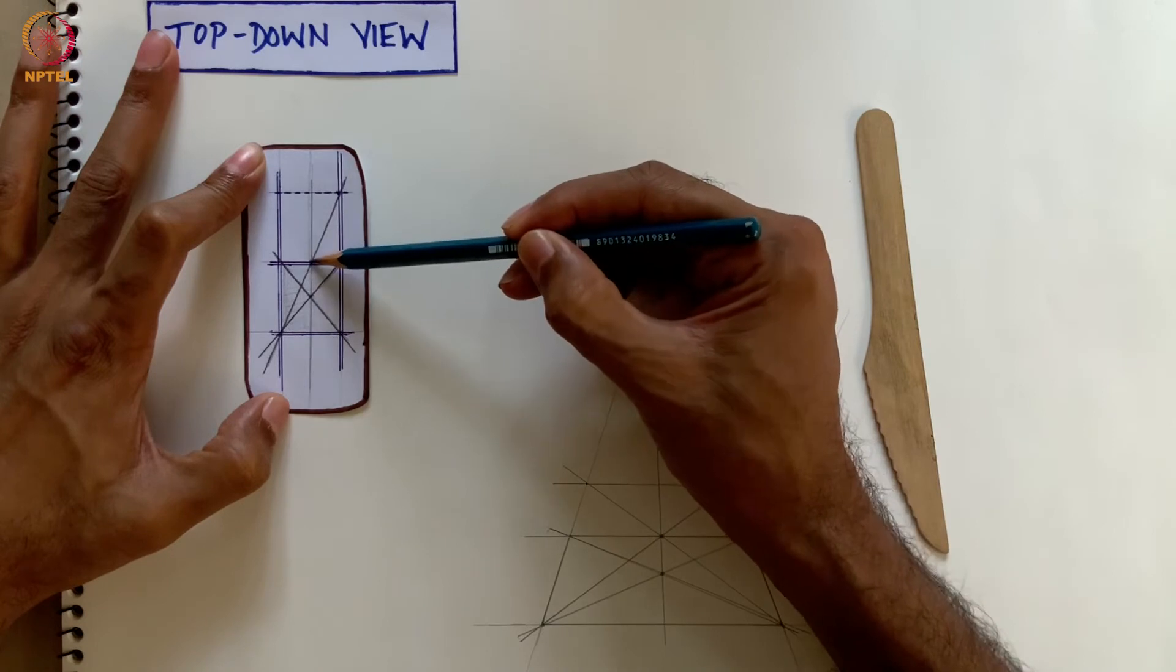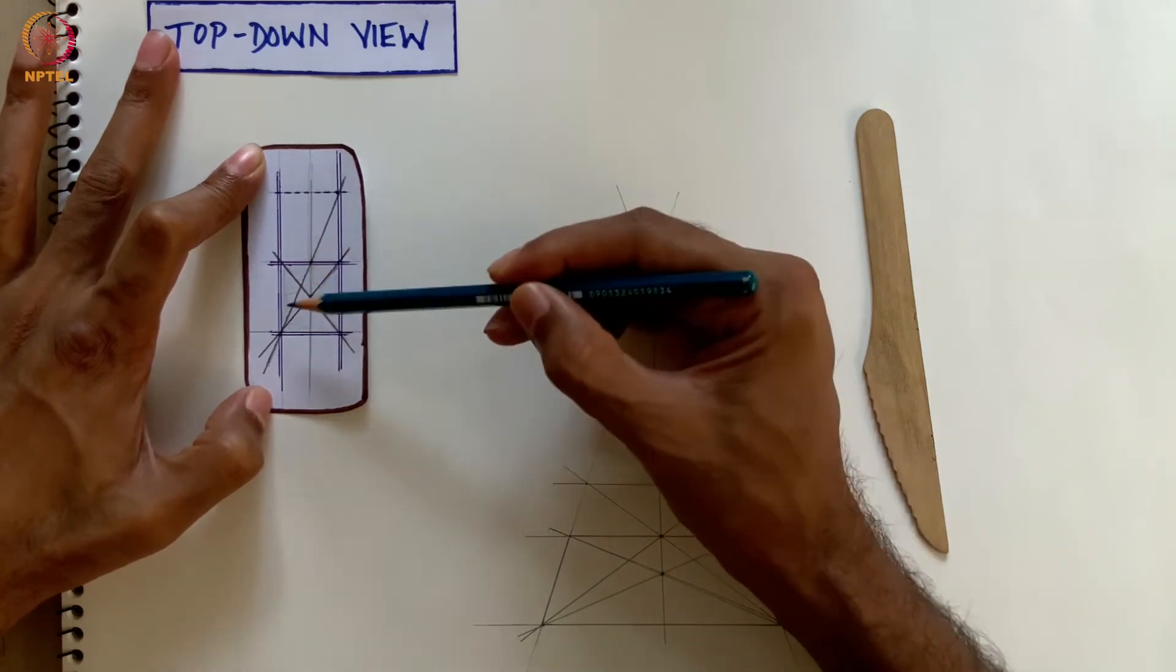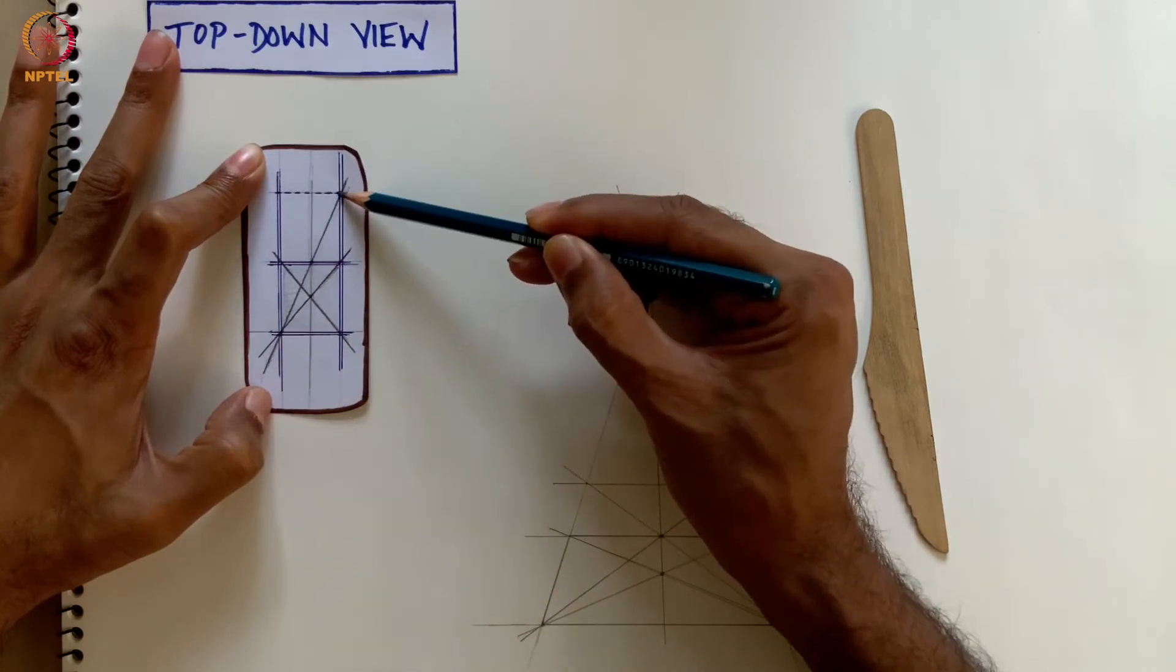Doing this produced the midpoint of the top edge, which we joined to the two corner points to construct the next horizontal line.